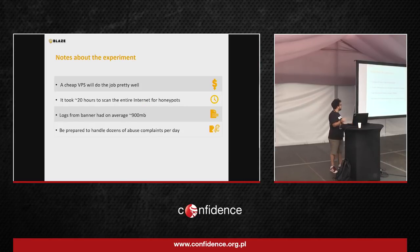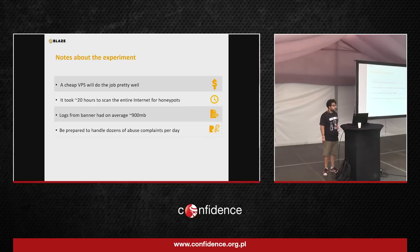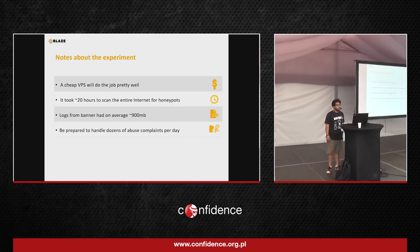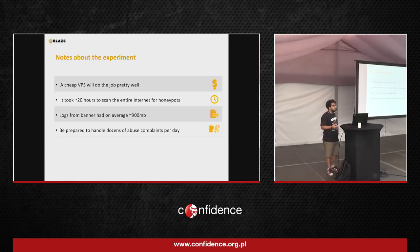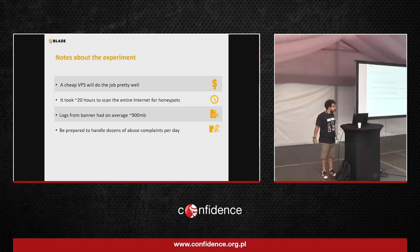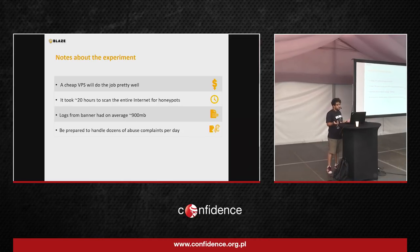Notes about the experiment: I got a cheap VPS with DigitalOcean. It took on average about 20 hours to scan the entire internet, and the logs were around 900 megabytes — so a $5 VPS does the job quite well. However, I was getting too many abuse complaints per day. Spamhaus and similar organizations apparently can't differentiate a simple TCP connect to port 22 from an active brute force. After a month of daily complaints, they froze my VPS. At least I got the results I wanted — but be prepared, you might get kicked out from DigitalOcean.